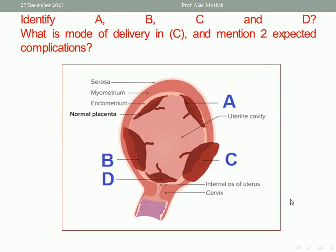Let us try to answer the first one — identify A, B, C, and D. As you see, this is the uterus, and this is the placenta. This is the normal placenta. A: there is placental adhesion, or it's called placenta accreta. So, A is the placenta accreta.